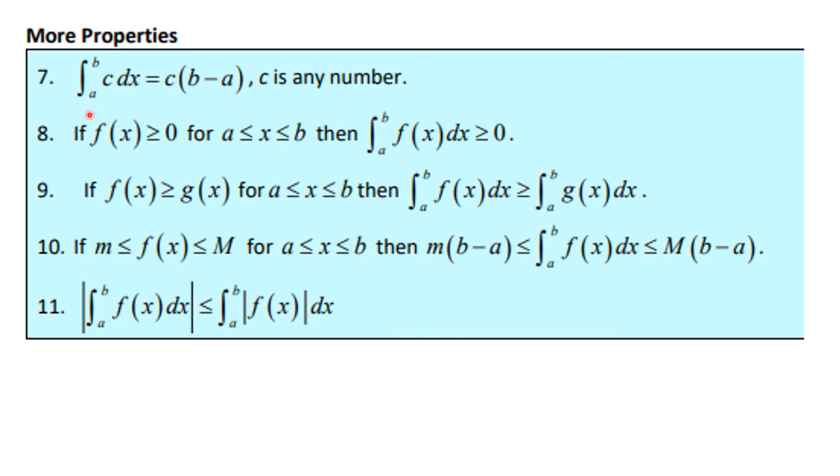Here are some more properties. If you're taking the definite integral from a to b of a constant c dx, that's a constant times the length of the interval. This can make your calculation quicker, and it really follows because this is a flat line, and that is how long the line is. So if I pull this through, that's just the integral of 1 from a to b, so it's c times b minus a, where c is any number.